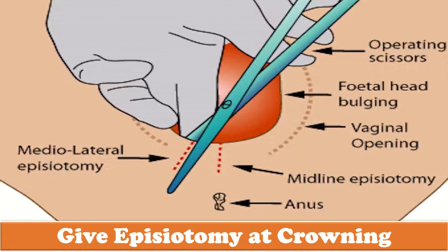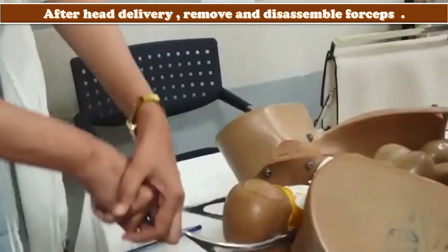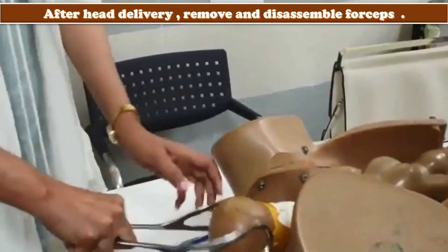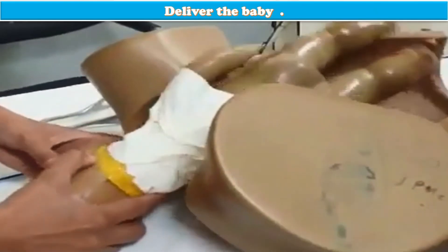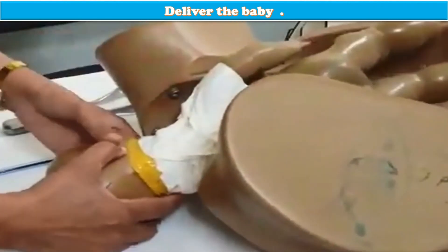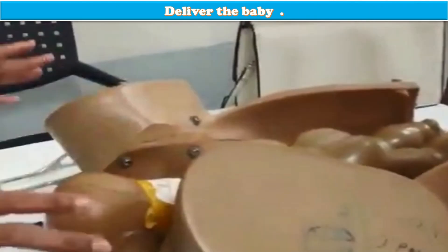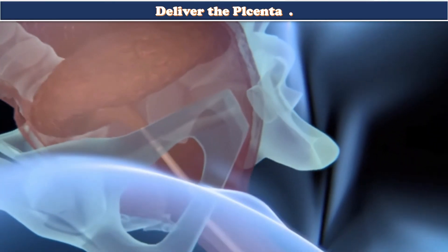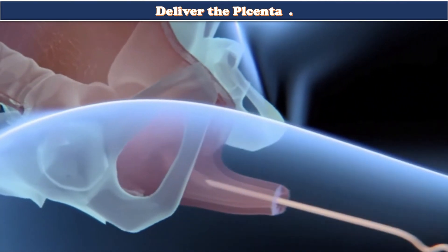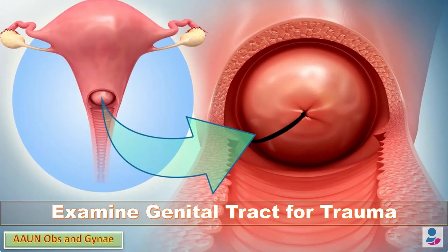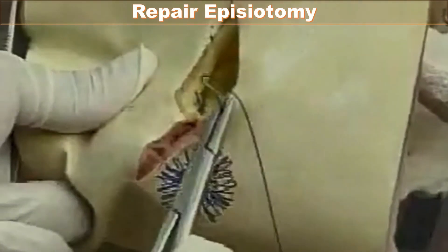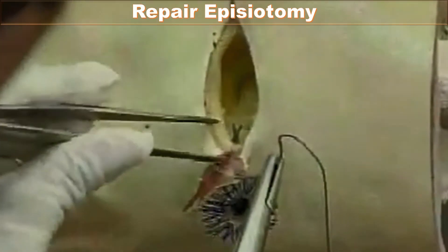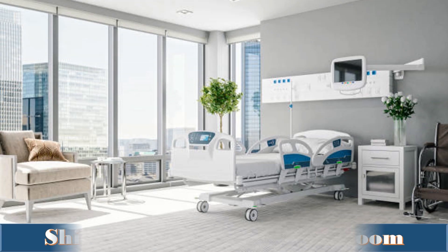I will apply traction synchronous with uterine contractions and maternal expulsive forces in the axis of the birth canal. At crowning of the head, I will ask my assistant to give an episiotomy if needed and support the perineum. Before the head is delivered I will disassemble the forceps, clean the mouth of the baby, then deliver the baby with the next contraction, cut the cord between two clamps, and hand the baby to the pediatrician. I will then deliver the placenta and check it for completeness and membranes.